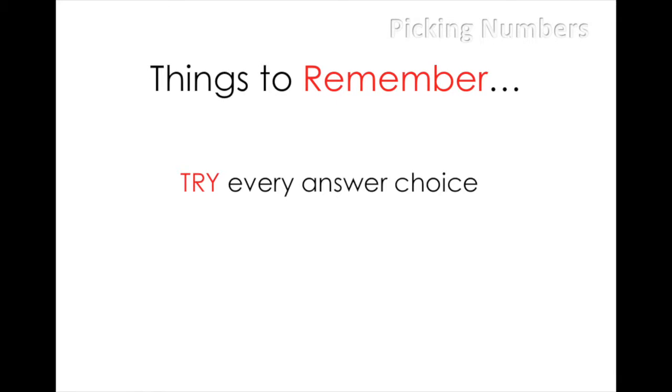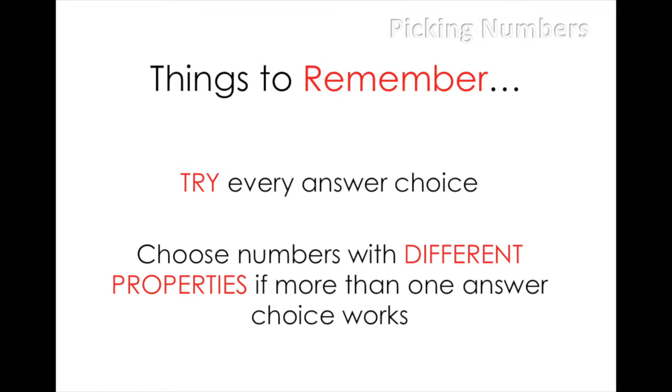If more than one answer choice works, try different numbers with different properties. For example, try a negative number if you're using a positive. Try an odd number if you're using an even. Only try your second number choice in the answers you haven't already crossed out. This should eliminate any double answers.